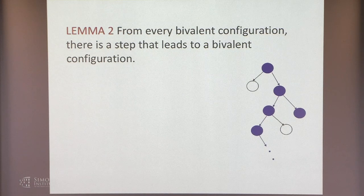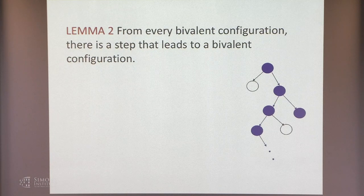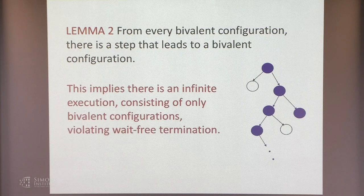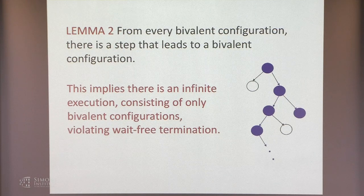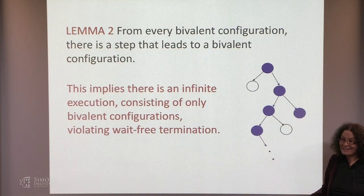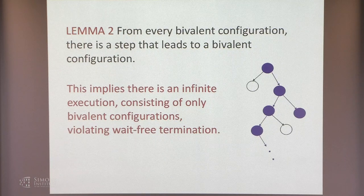The next lemma says from every bivalent configuration, there is a step that leads to another bivalent configuration. This implies there's an infinite execution consisting only of bivalent configurations, which violates wait-free termination. We start with an initial bivalent configuration — which exists by Lemma 1. By Lemma 2, from that we can get to another bivalent configuration, and so on indefinitely. No process ever outputs, because once a process outputs a value, the configuration is univalent. It remains to prove Lemma 2.